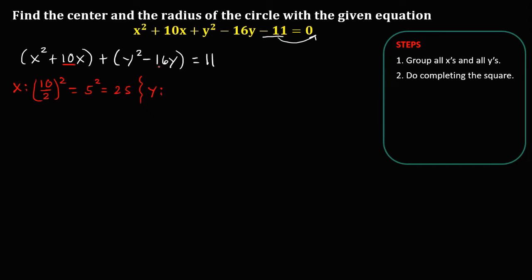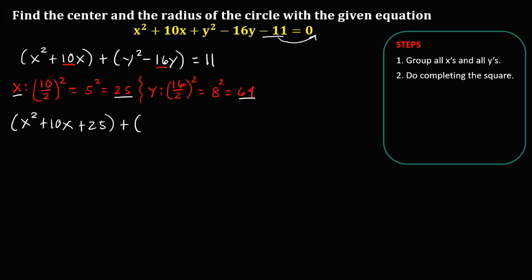And for y, take the coefficient of y, that's 16. Divide by 2 and take the square: 16 divided by 2 is 8, and 8 squared is 64. Then add 25 to the x equation and 64 to the y equation: x squared plus 10x plus 25, plus y squared minus 16y plus 64 equals 11. Since we added 25 and 64 on the left side, we also need to add 25 and 64 on the right side.